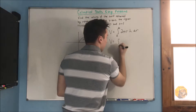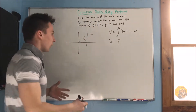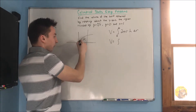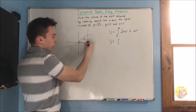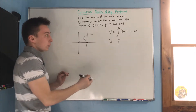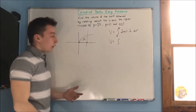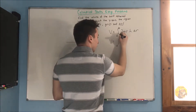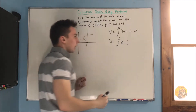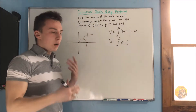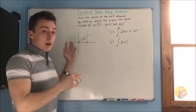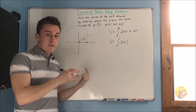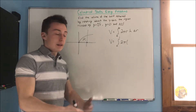Since we're rotating about the y-axis, which is a vertical line, we're going to be integrating with respect to x. Our region spans from x equals 0 to x equals 1 — I know this is x equals 1 because of the equation x equals 1. So we're integrating from 0 to 1 of 2π. We're forming a bunch of small cylinders, finding the volume of each, and adding them up by taking the integral.